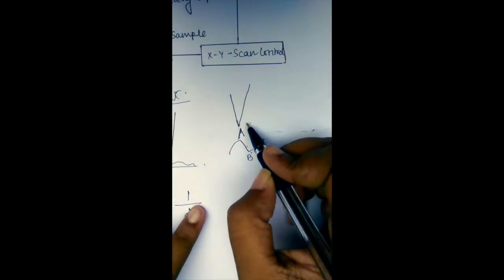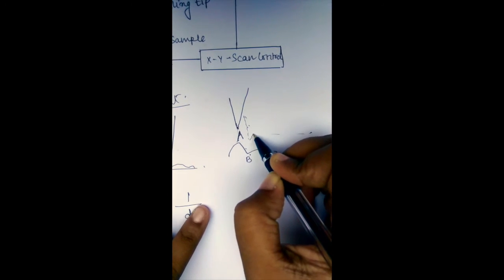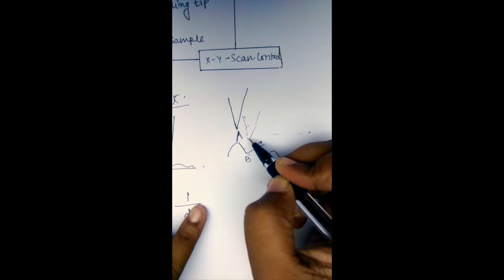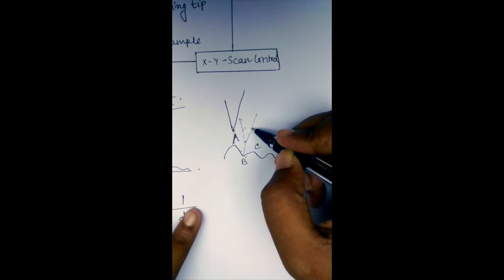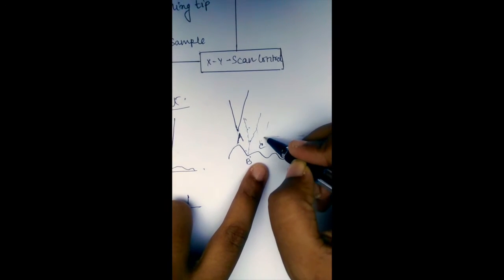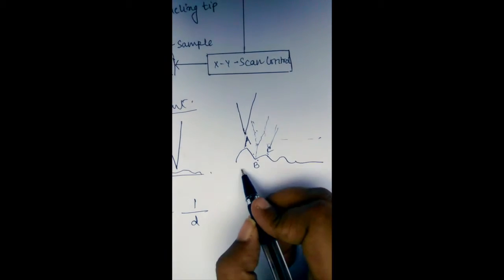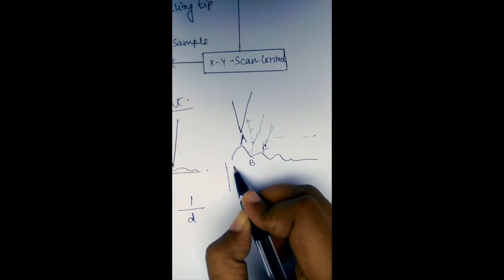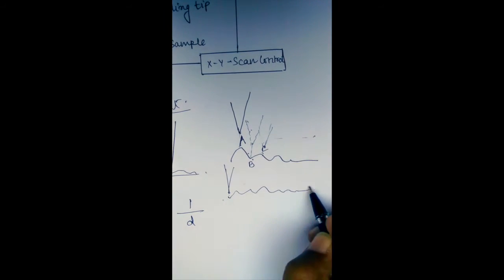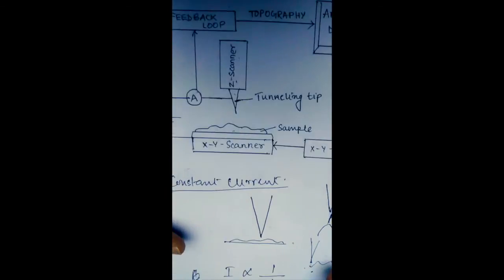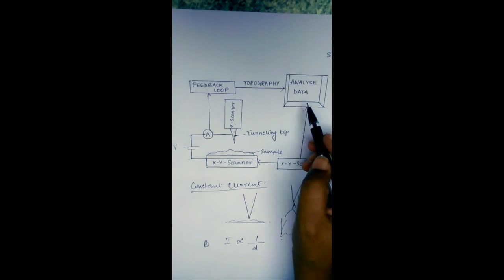To maintain constant current, the tunneling tip moves down to keep the same proximity to the sample, so the distance varies while the current stays constant. When it moves to point C, the height changes accordingly so that the current detected remains constant. This motion of the tunneling tip through the scanner is detected and sent to the feedback loop, where topography is used to analyze the data.